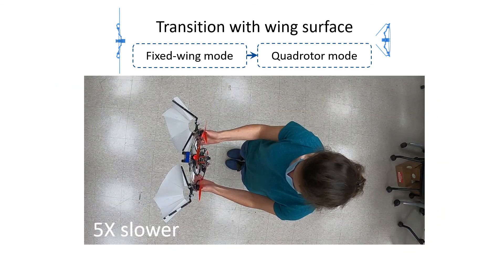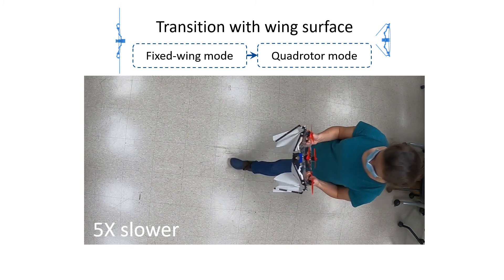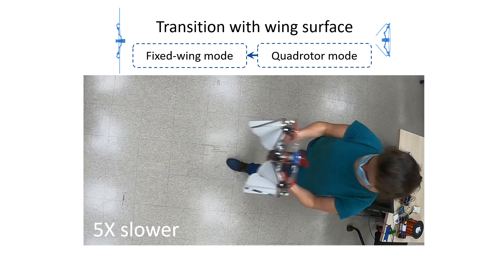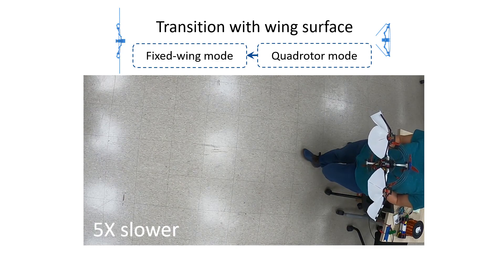We also tested with the addition of a wing surface. Here is the transition from fixed-wing to quadrotor. And the transition from quadrotor to fixed-wing. Thank you.